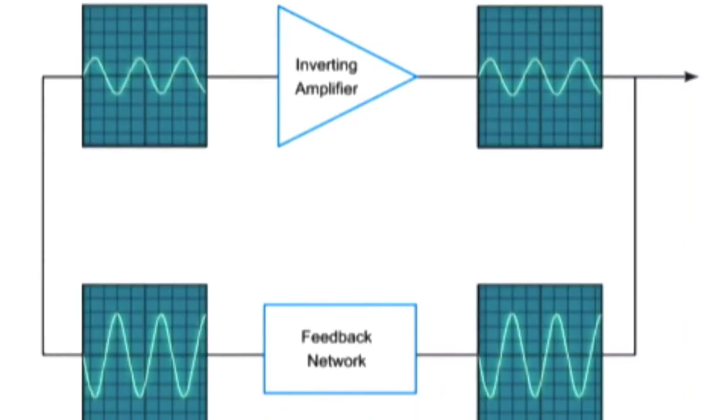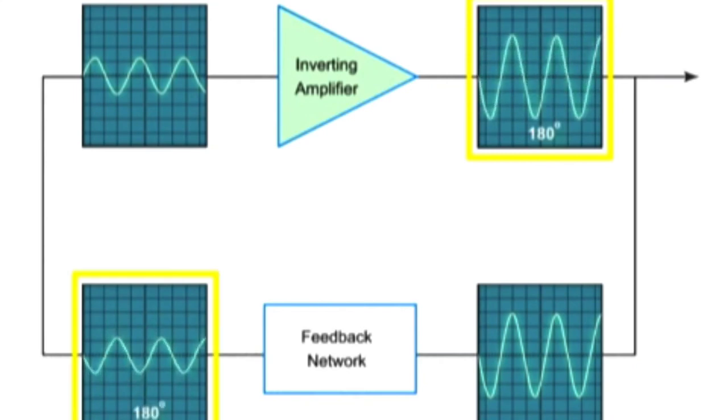The phase state is sustained when the inverting amplifier's 180 degree phase shift is reversed by the 180 degree phase shift of the feedback network.